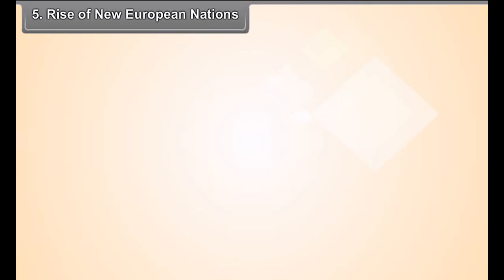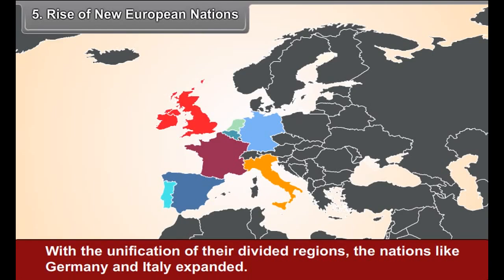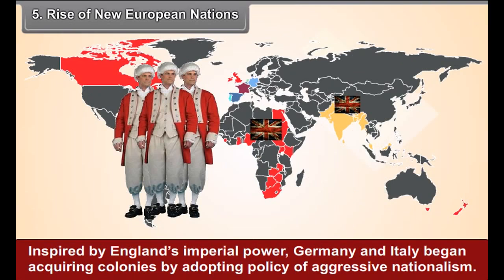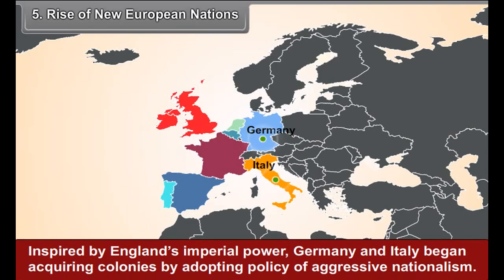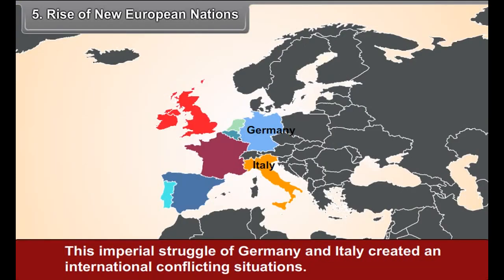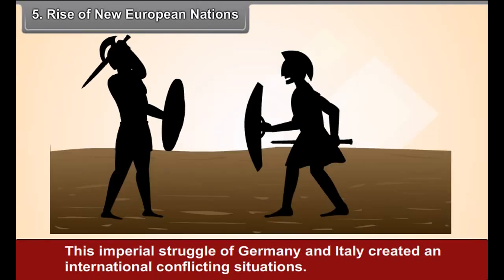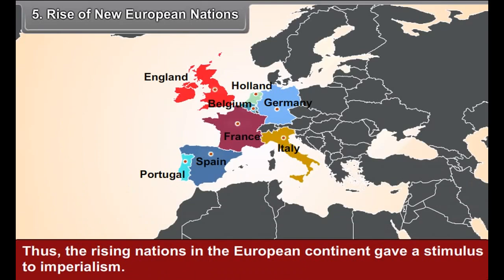Fifth, rise of new European nations: With the unification of the divided regions, nations like Germany and Italy expanded. Inspired by England's imperial power, Germany and Italy began acquiring colonies by adopting a policy of aggressive nationalism. This imperial struggle of Germany and Italy created an international conflicting situation. Thus, the rising nations in the European continent gave a stimulus to imperialism.